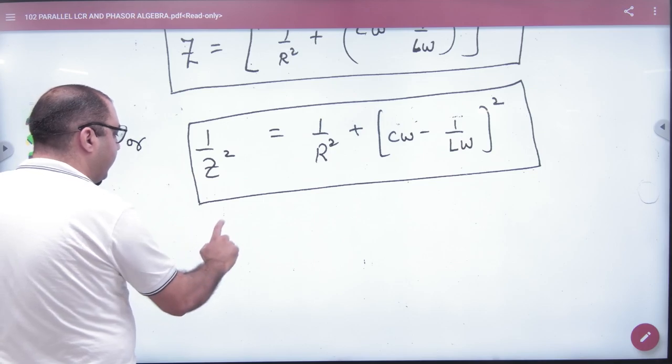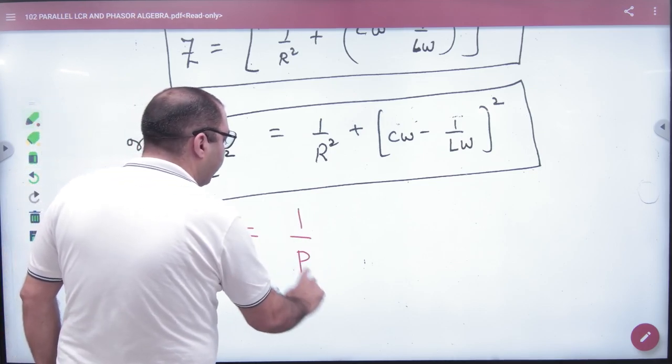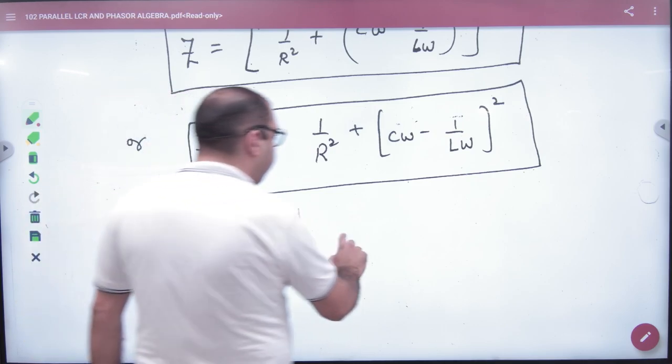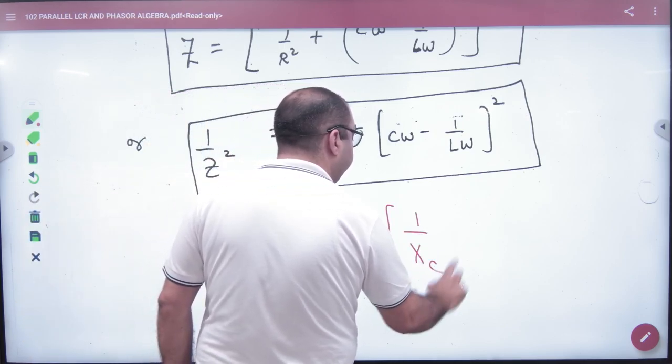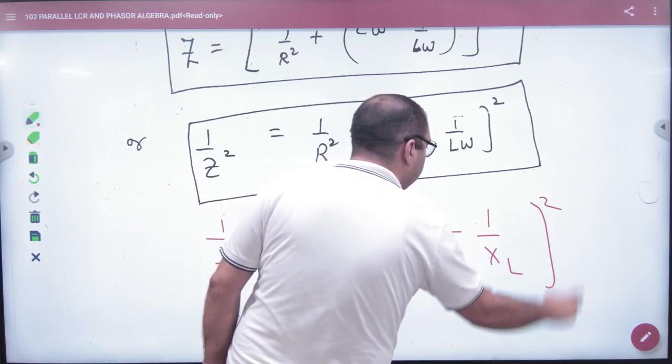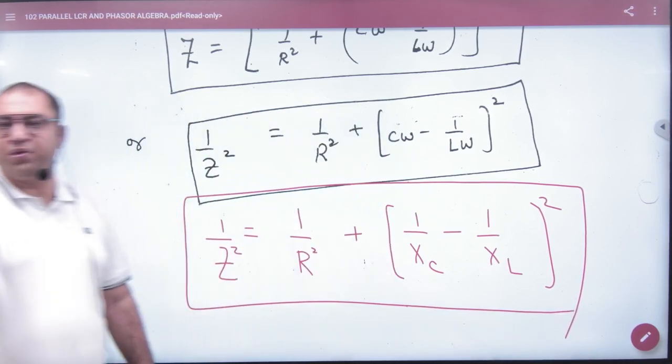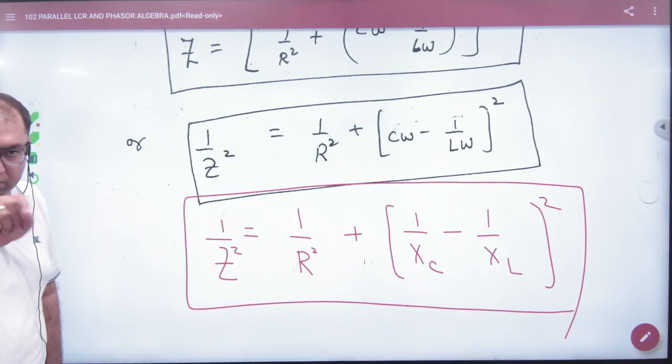Formula for impedance: write 1/Z² = 1/R² + (1/X_C - 1/X_L)². Please note this formula. Parallel combination formula, which is in the booklet - note that.